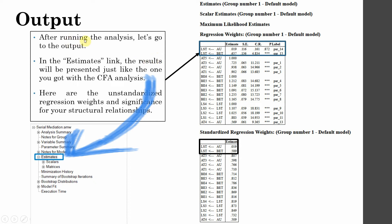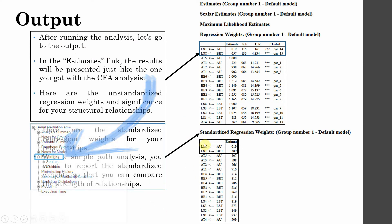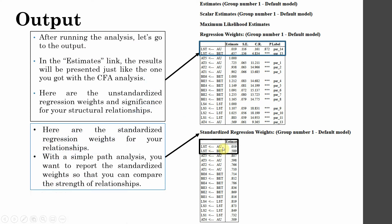After running the analysis, go to the output. In the Estimates tab, you see your results — these are unstandardized estimates. Here are your standardized estimates that we report along with your critical ratio and p-value.